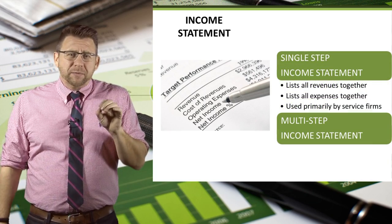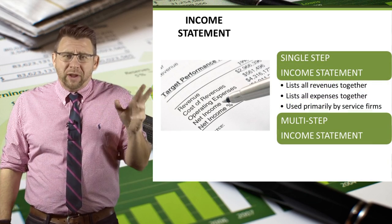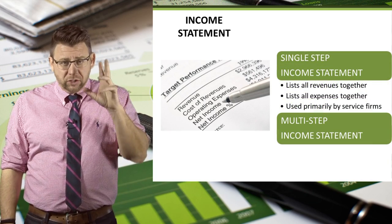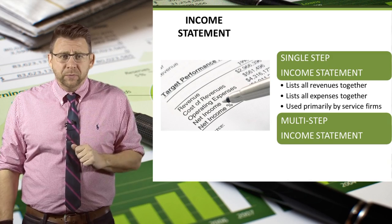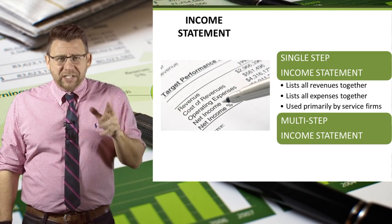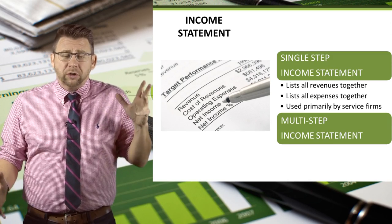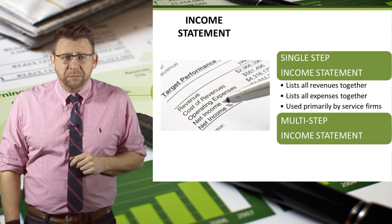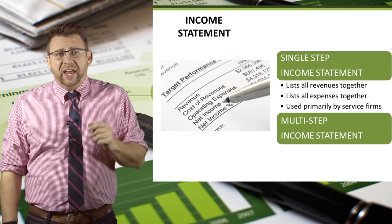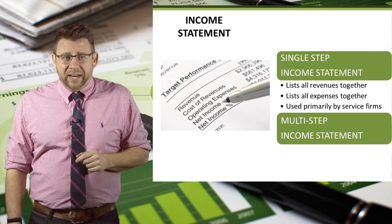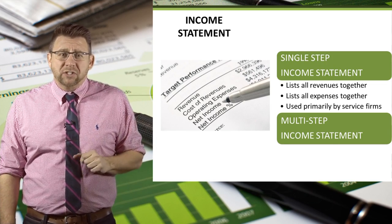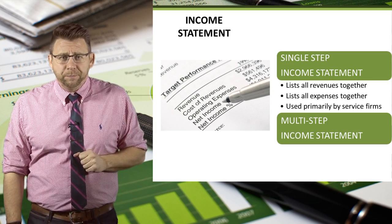The single-step income statement lists all revenues together and totals them for total revenue. Then all expenses are listed together and totaled for total expenses. The difference is then net income. This format is primarily used by service firms.